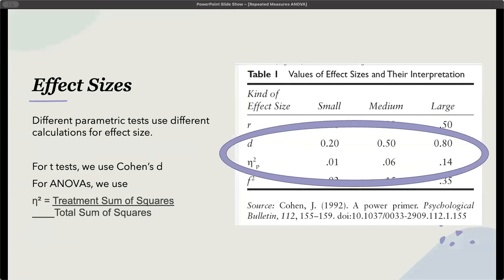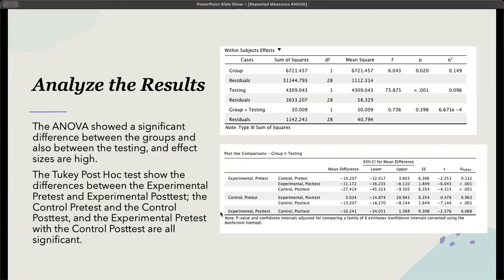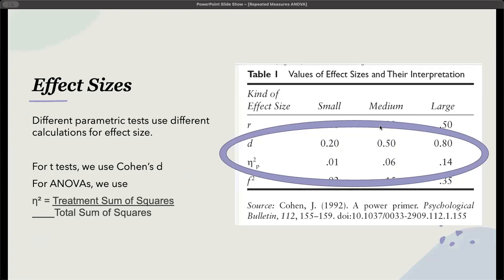For effect size, remember with eta squared: 0.14 is large, 0.06 is medium. If we go back, we can see the effect size for the testing is 0.09, so that is a medium to large effect size — it would fall right in the middle between the two.